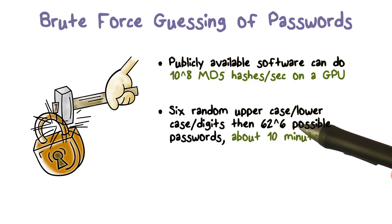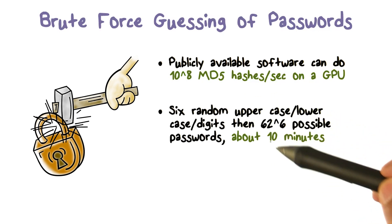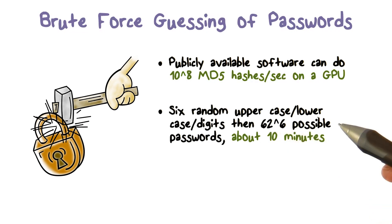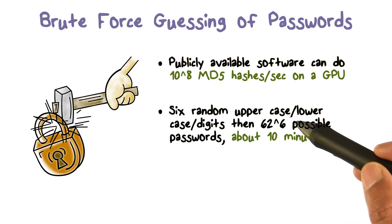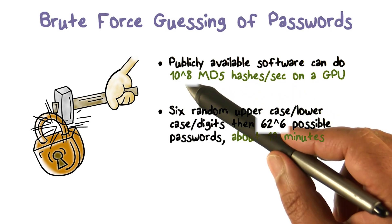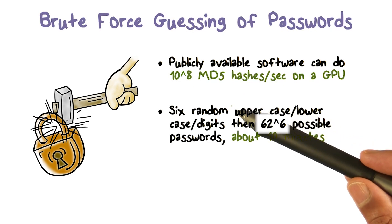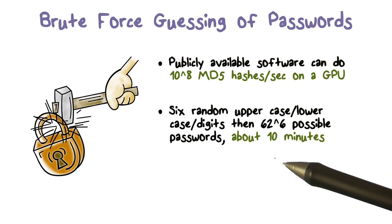If the password is only six random upper or lower case letters — 26 upper case, 26 lower case — or digits, that gives us 62 total characters. With 62 possibilities and a six-character password, there are 62 choices for each character, so the total number of possible passwords is 62 to the power of 6. Dividing that by 10 to the power of 8 — how many hashes we can check per second — this brute force guessing attack can be carried out in about 10 minutes.